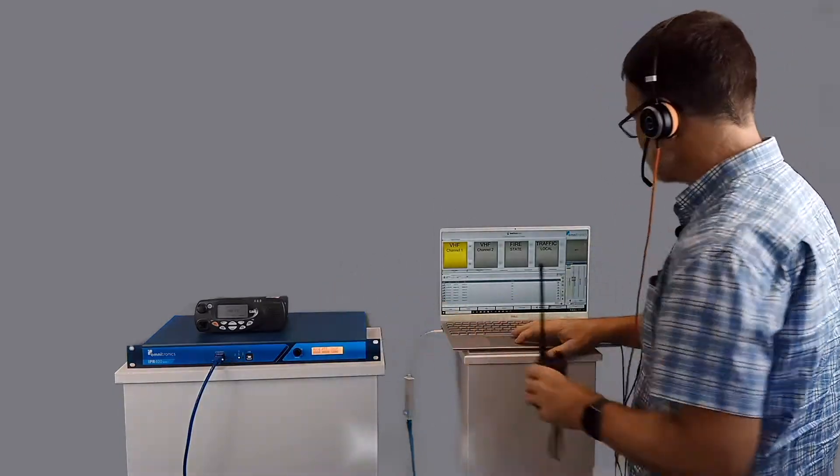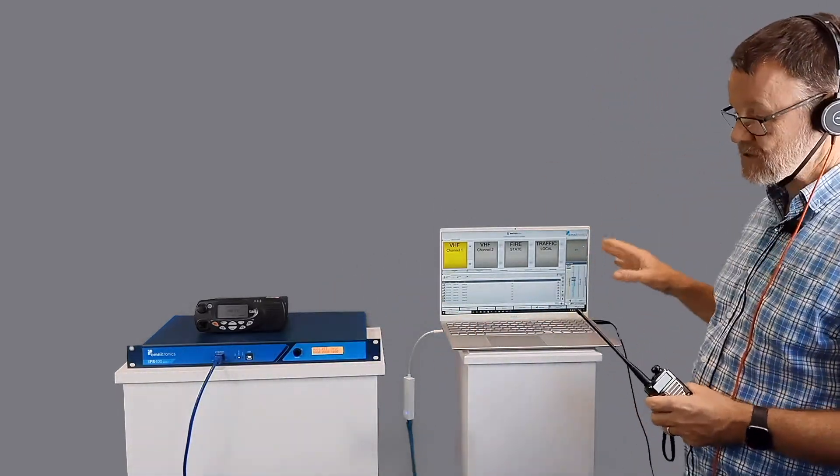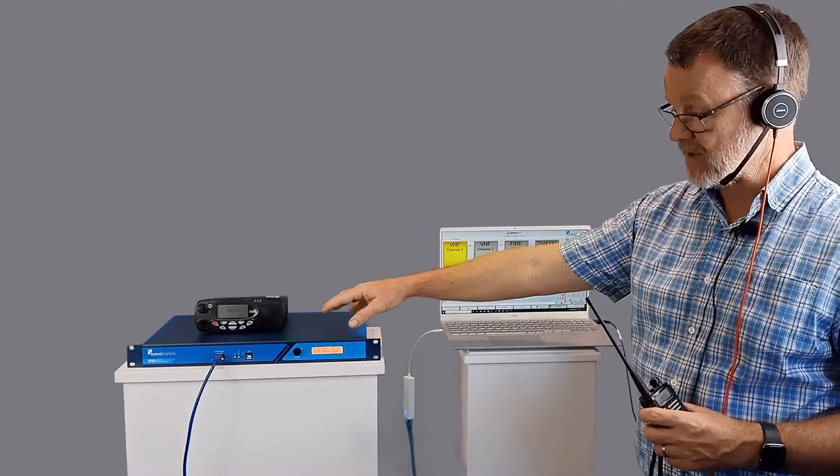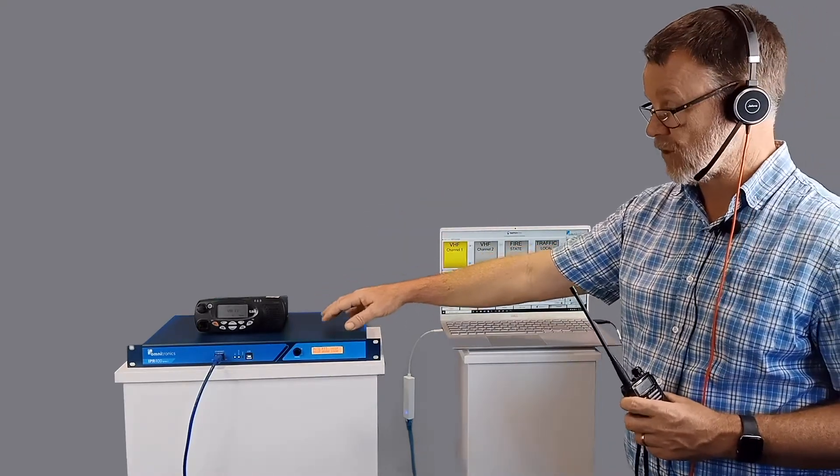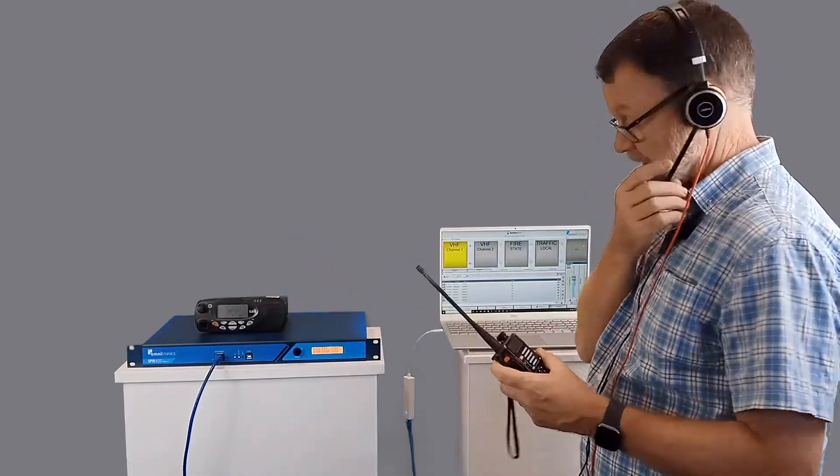So using my dispatch system, I'm going to send a push to talk. It will encode up our audio, send it via the network. The radio over IP gateway will decode that audio and control signals and will key up the radio, and we should hear my voice come out of this radio here.